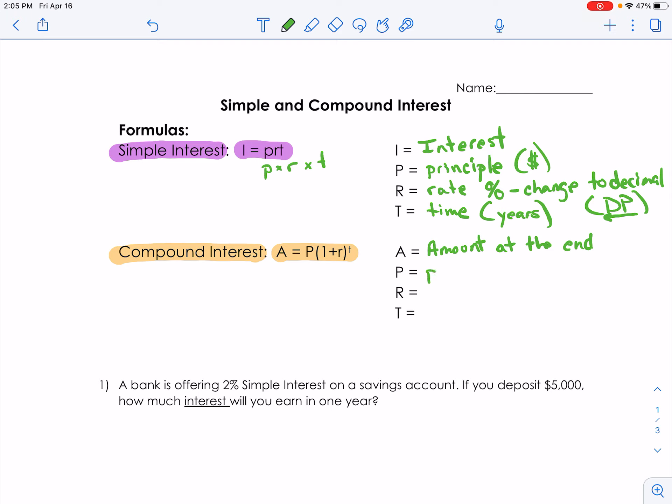P is still principal, which is the amount of money we're either borrowing or saving. R is rate, change it to a decimal.